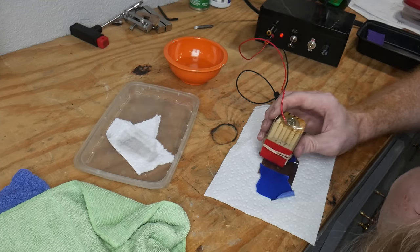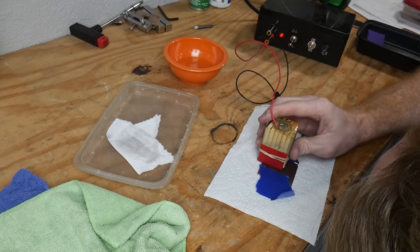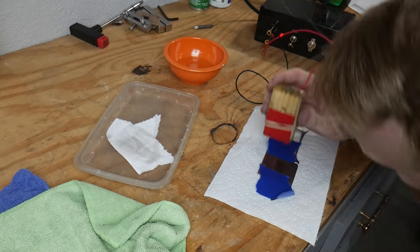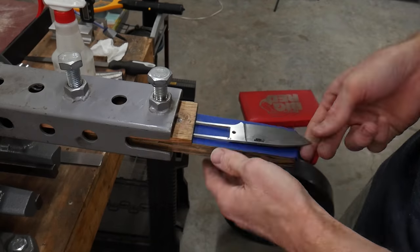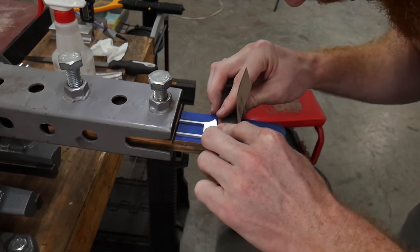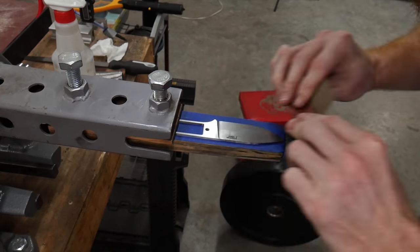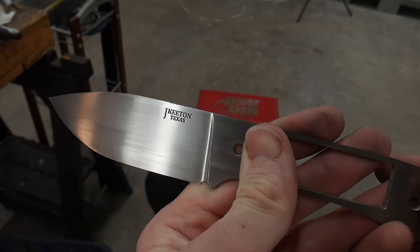Once the hand sanding is complete, it's time to etch in our maker's mark with my DIY electrochemical etching machine. I hit the stencil 15 times for one second on DC power for a nice and deep etch, then around five times for one second on AC power in order to darken our etch. I then lightly sand over the mark in order to clean up its edges.